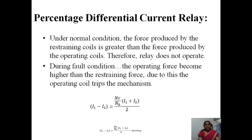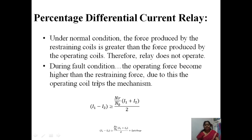Under normal conditions, the force produced by the restraining coil is greater than the force produced by the operating coil; therefore, the relay does not operate. During fault conditions, the operating force becomes higher than the restraining force, and the relay operating coil trips the mechanism.